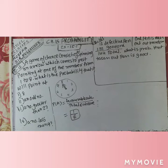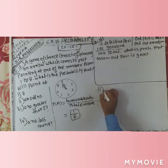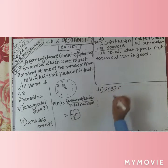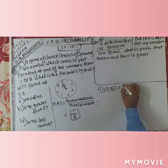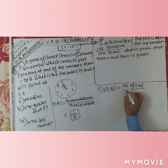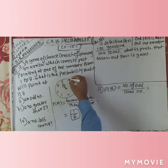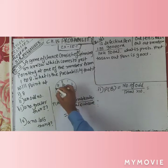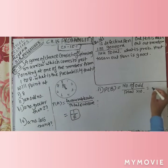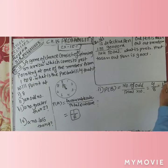Now second event B: what is the probability of pointing at an odd number? The odd numbers between 1 and 8 are 1, 3, 5, and 7 — that's 4 numbers. So P(B) = number of odd numbers upon total numbers = 4 upon 8 = 1 upon 2.